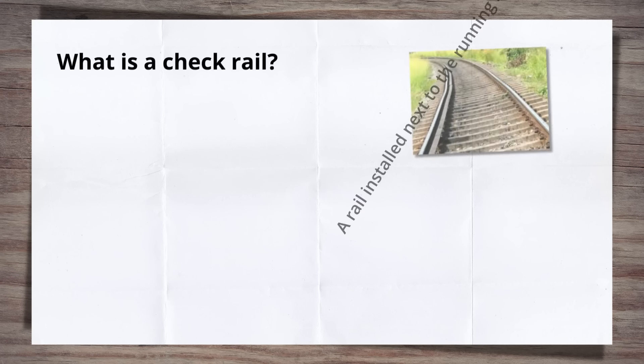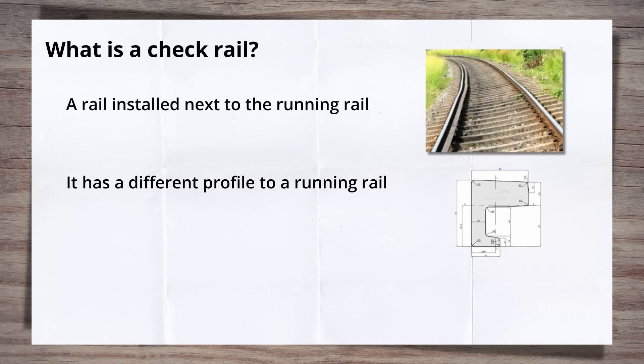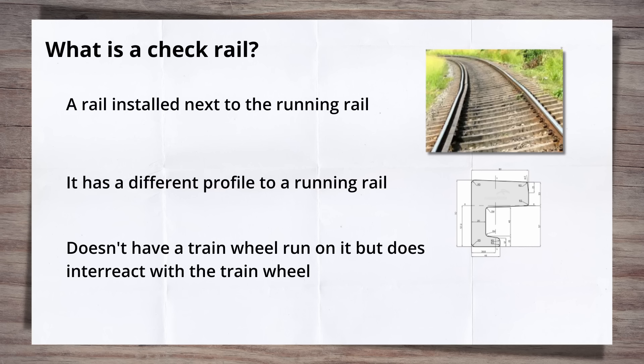So what is a checkrail? A checkrail is a rail installed next to the running rail. It has a different profile with a flat surface facing the running rail. The checkrail doesn't have a wheel run on it but it does interact with the wheel.